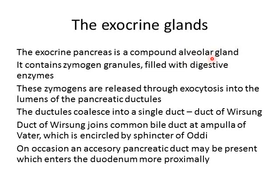It's got alveoli — small sacs — filled with zymogen granules, and these granules are filled with digestive enzymes. These zymogens are released through exocytosis: they migrate from inside the cell to the cell membrane and release their products into the lumens of the pancreatic ductules. These ductules coalesce into a single duct, the duct of Wirsung.